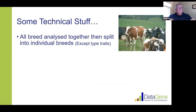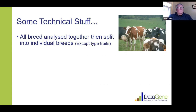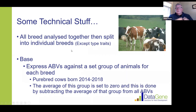All breeds are analyzed together. When we get all the data in from different herds around the country — all the production data, workability, and so on — it all gets analyzed together. So if you've got a herd of Holstein and Jersey cows, we analyze them together. When we do our first cut of ABVs, everything is in the big melting pot — there's no difference, we don't see breed at that point.